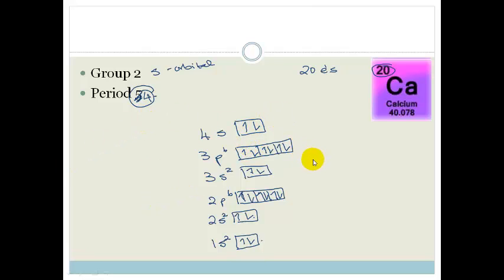But we could also write out the electron configuration as we did before. So it would be 1s2, 2s2, 2p6, 3s2, 3p6, and 4s2 in this case.